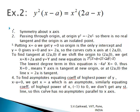The second example: y²(x − a) = x²(2a − x). This is again symmetric about the x-axis and passes through the origin. However, the lowest degree terms give y² = −2x², so there is no real tangent at the origin. When this happens, the origin is an isolated point — the curve is absent in that region but the origin still satisfies the equation.